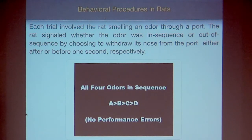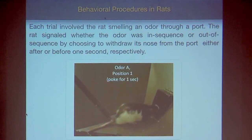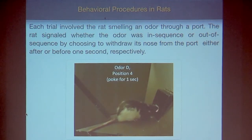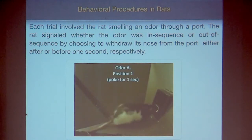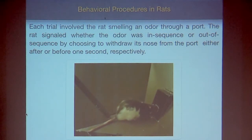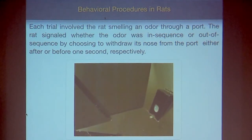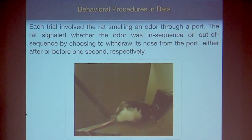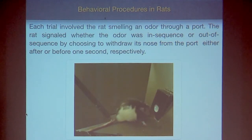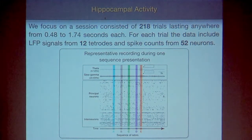In the video: four odors A, B, C, D in the correct order — no performance error, and there is a water reward. The second trial is A, B, D, D — out of sequence, so the rat should identify it. The third trial is A, B, A, D — wrong order, but there's a performance error. The rat stayed too long — it was confused. The rat pulled out right away on the correct out-of-sequence trial, getting the reward.